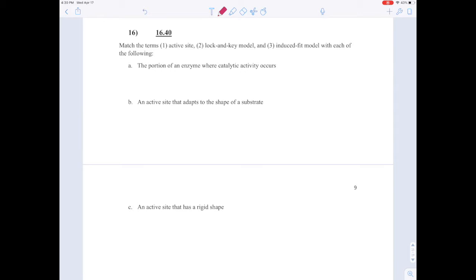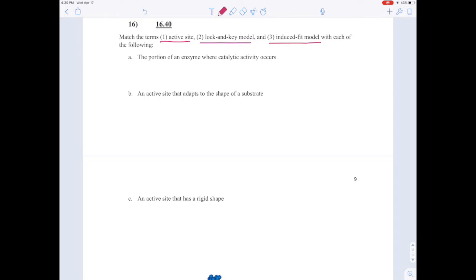In chapter 16, question 16, they're asking you to match a few descriptions to a few key terms. The terms are active site, that's number one, lock and key model, two, and induced fit model, three. So let's discuss what each of those things are before we look at the descriptions.